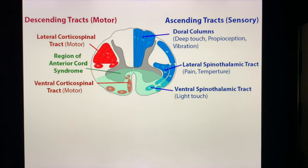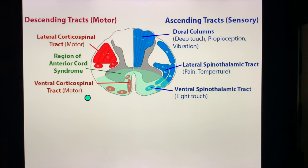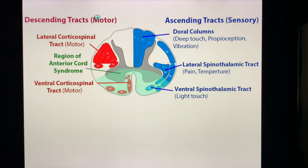Please take time to review this video, especially this part. There are some tracts which we have to remember. Number one is the corticospinal tract — the lateral corticospinal tract and the ventral corticospinal tract — both are responsible for motor function. Descending tracts have motor function. On the other hand, ascending tracts have sensory function. Under the ascending tracts, I want you to memorize the dorsal columns, and the lateral and the ventral spinothalamic tract.